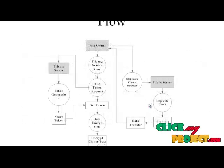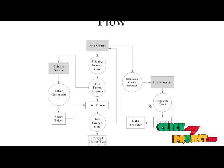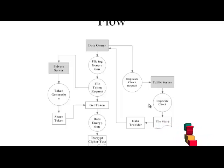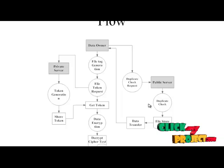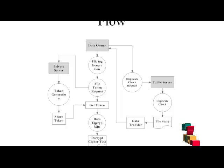This is the object process. The data owner will be used to file and generate the task for getting the tokens in the private server. The data owner will restrict the private server by sending the file. The private server will get the file task from the data owner, generate the tokens, and share the tokens to the data owner. The owner will then open the data based on the token and store the data into the public server based on the token.